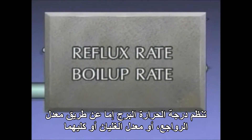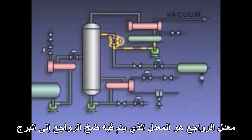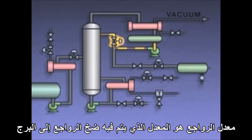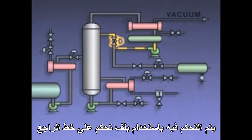or both. The reflux rate is the rate at which reflux is pumped to the column; it's adjusted using a control valve in the reflux line. The boil up rate is controlled by adjusting the steam flow to the reboiler.